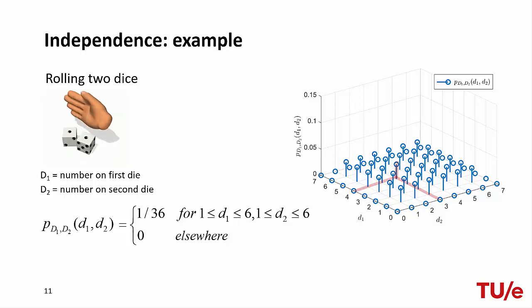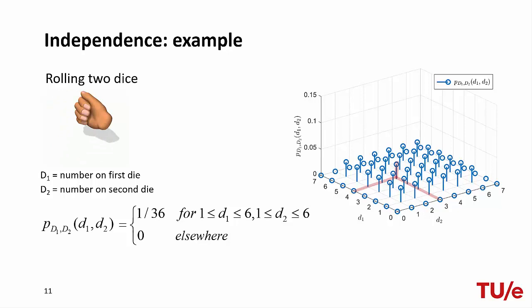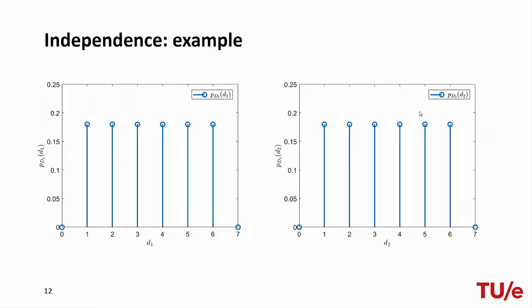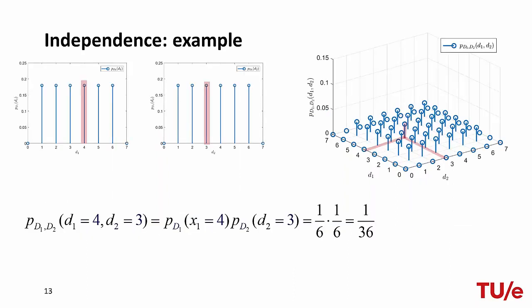Suppose we want to calculate the probability of d1 being equal to 4 and d2 being equal to 3. Since d1 and d2 are independent rolls, it is sufficient to multiply the probability of d1 equal to 4 by the probability of d2 equal to 3. We can first use marginalization to obtain the two marginals pd1 and pd2, then use these to calculate the probabilities. When we multiply them, we obtain indeed 1 over 36, and we can repeat this for any d1 and d2, confirming that d1 and d2 are independent.